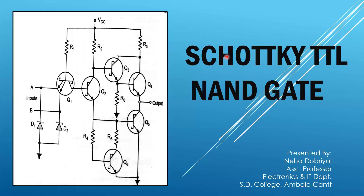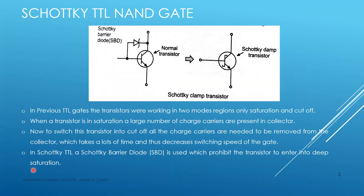Hello everyone. In today's lecture we are going to cover Schottky TTL. Here you can see a simple transistor which has a Schottky barrier diode. A Schottky barrier diode is a very fast switching diode. The forward voltage is 0.25V as compared to 0.7V of a normal P-N junction diode.